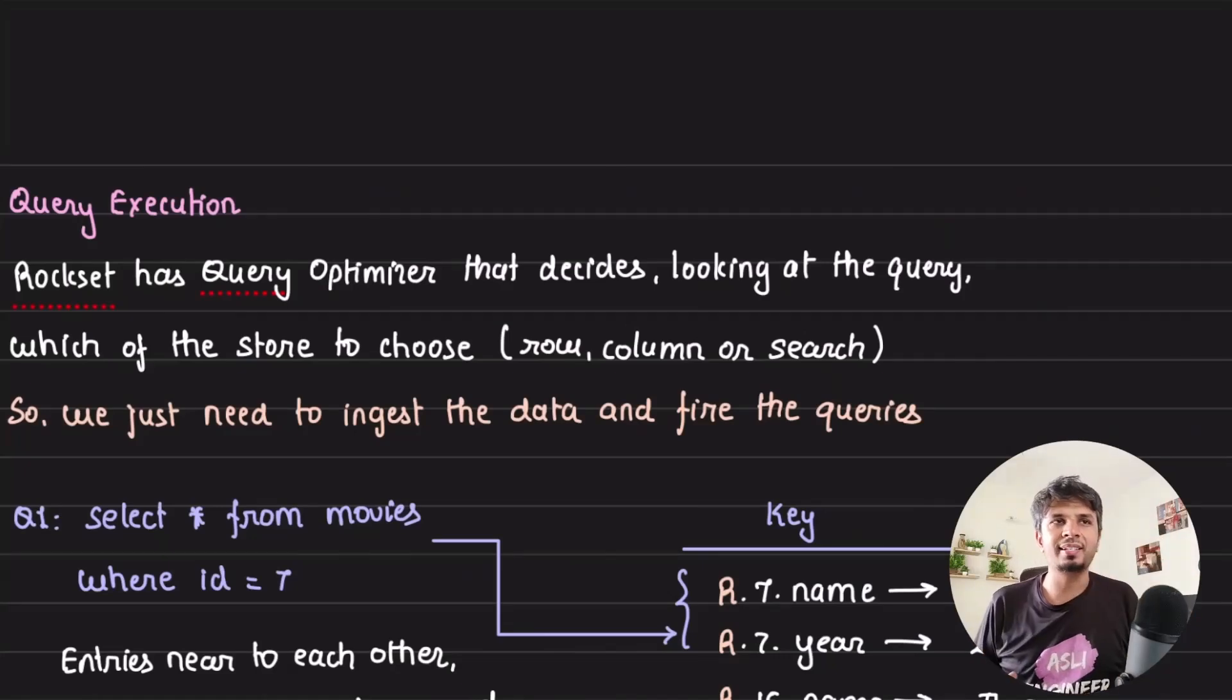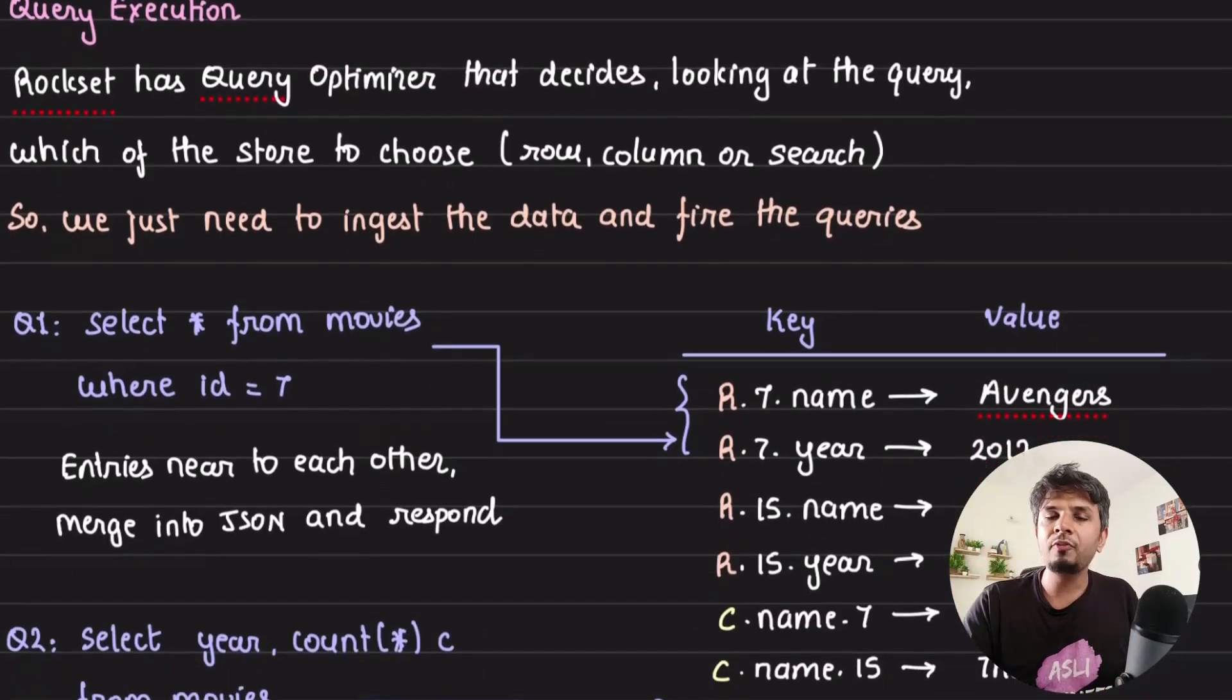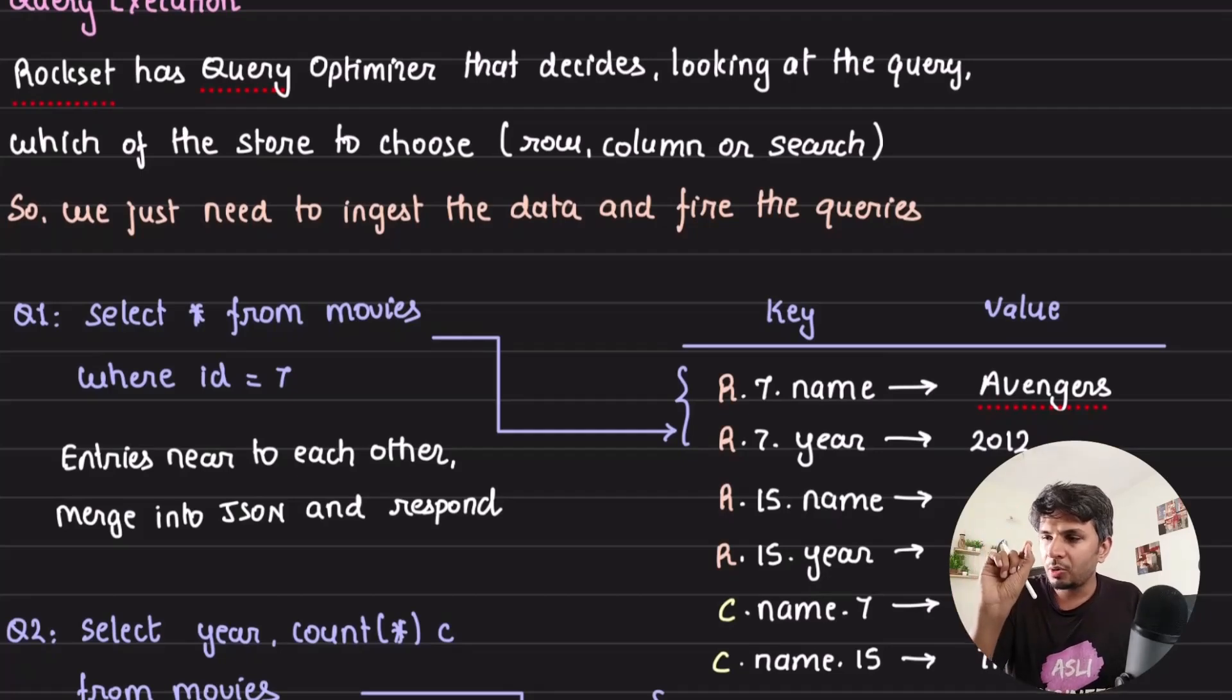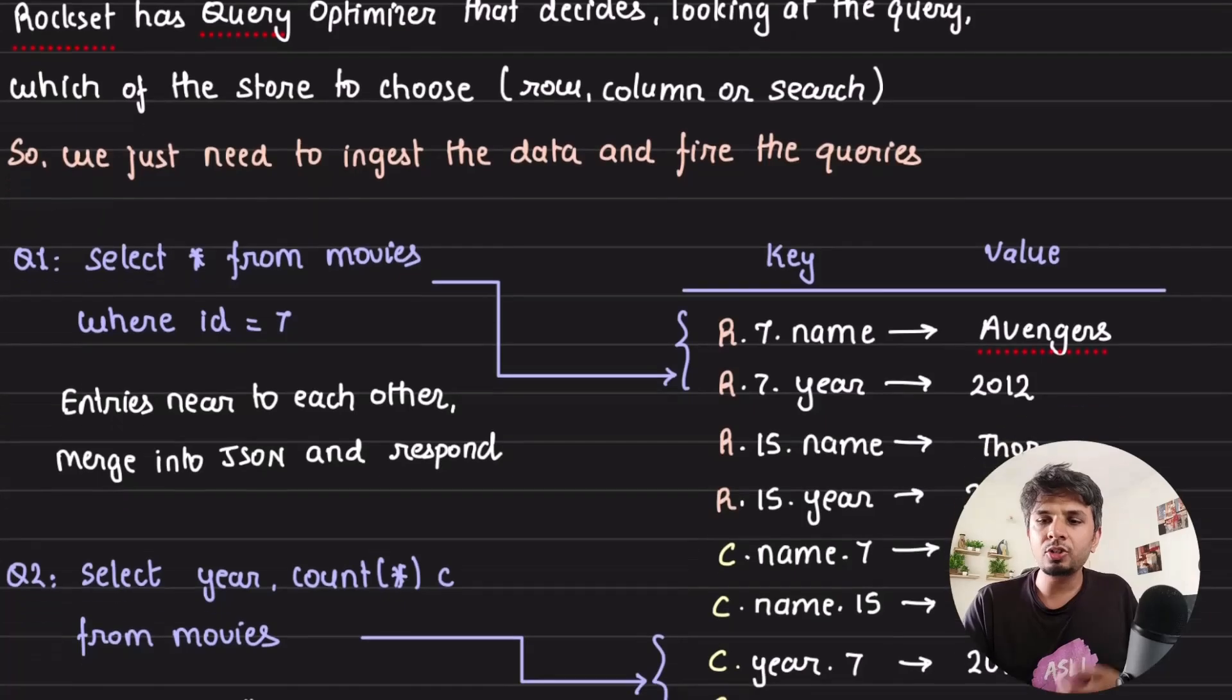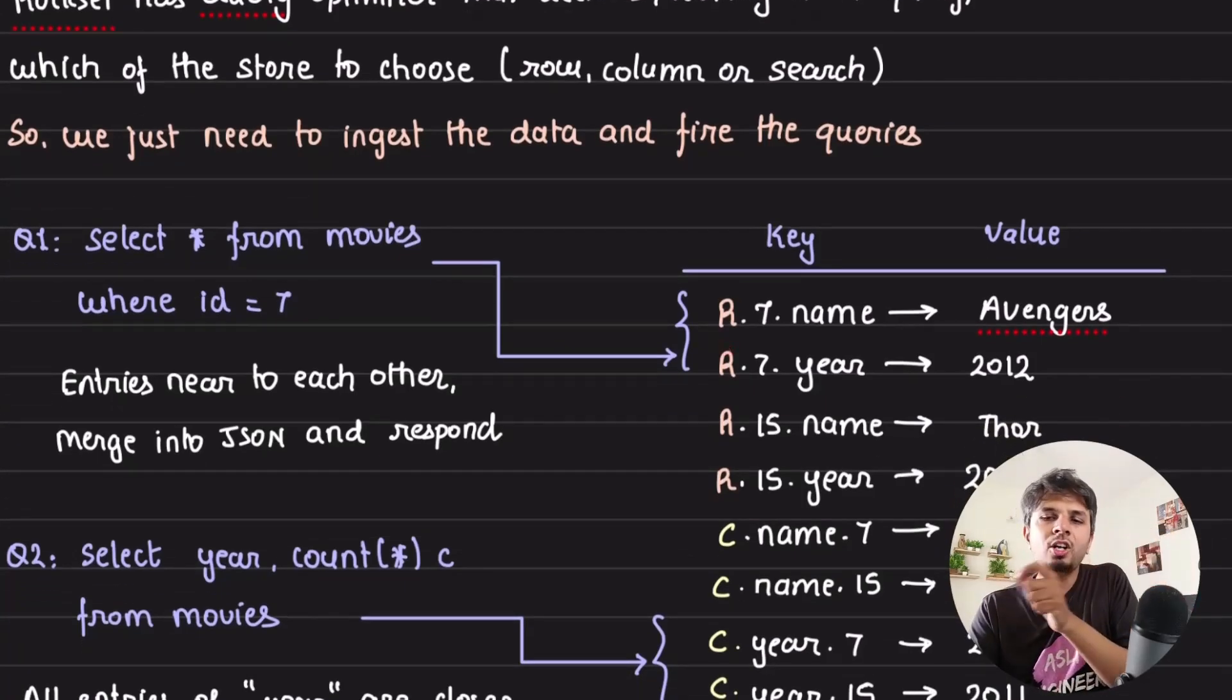Now coming back to the query execution we were discussing. When a query comes to Rockset, it comes to its aggregator node that we saw in the first video. There the query optimization takes place. The query is parsed, a parse tree is created, then an optimizer goes in and creates an optimized plan or a query execution plan. For this query execution plan, it figures out for this type of query what type of key-value should I be looking up for. Should I go for R-based keys or C-based keys or S-based keys? I'll give you an example to make you understand very clearly.